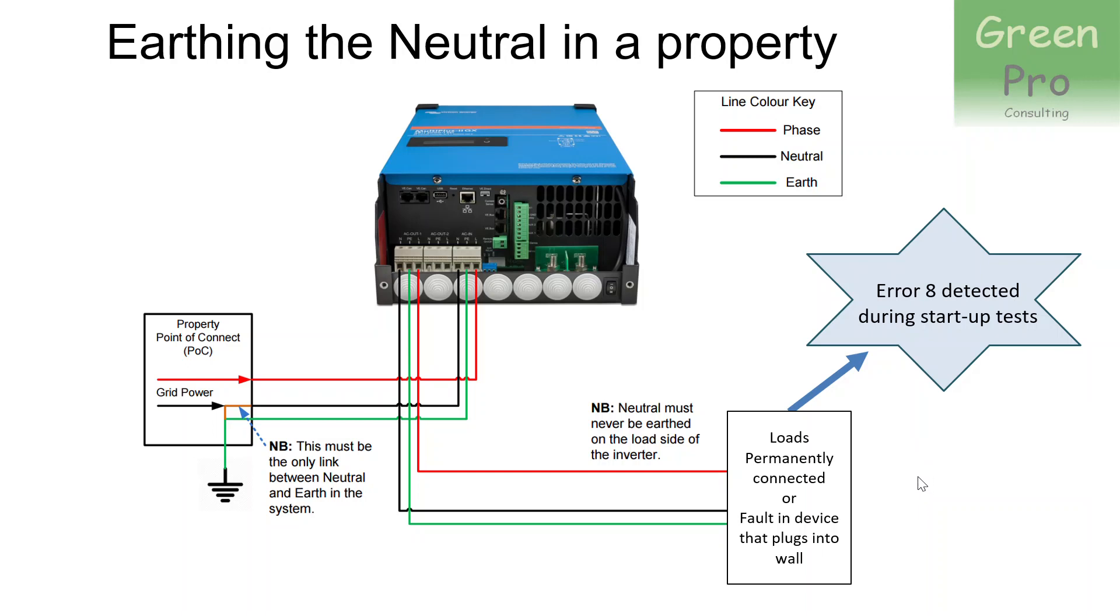And then you get a call from the customer that says, my system keeps on tripping because that's how he experiences it. And he doesn't know how to look at the error codes. And when you get there, it's Error 8 and it is tripping because there's a leak current probably in some foreign device that's plugged into your house. And that's not the house's problem.